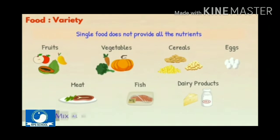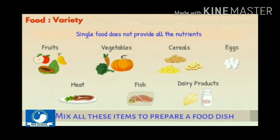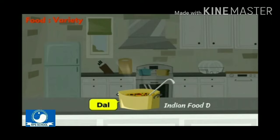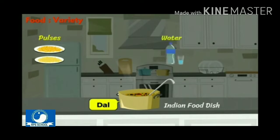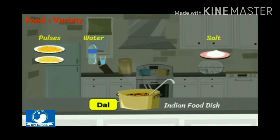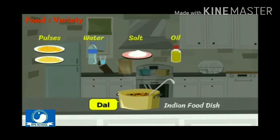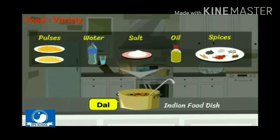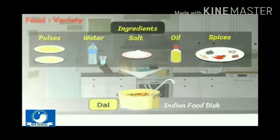Therefore, we mix all these items to prepare a food dish. For example, dal is a famous Indian food dish, which is a mixture of pulses, water, salt, oil and spices. The materials used to prepare a dish are called ingredients.